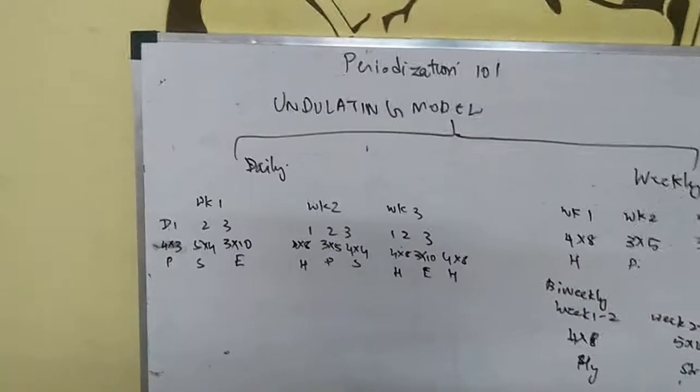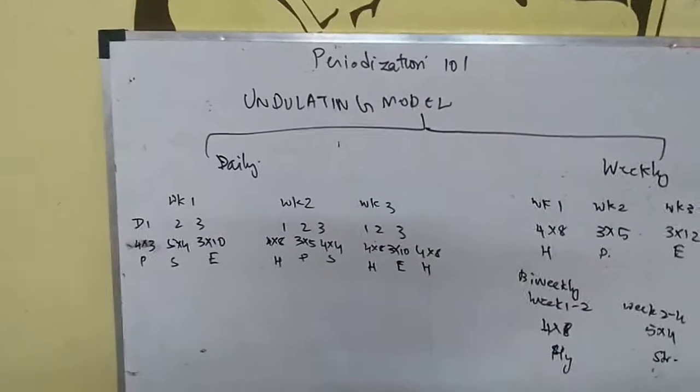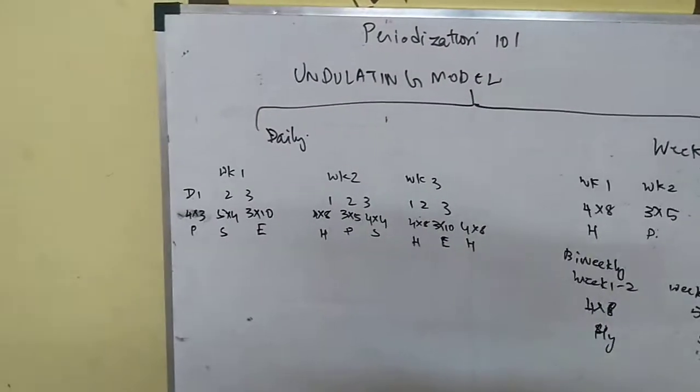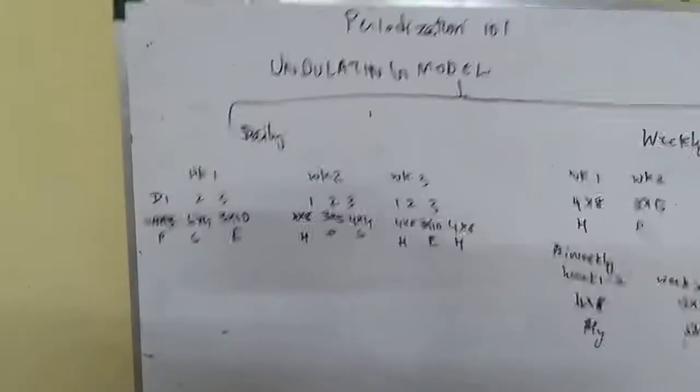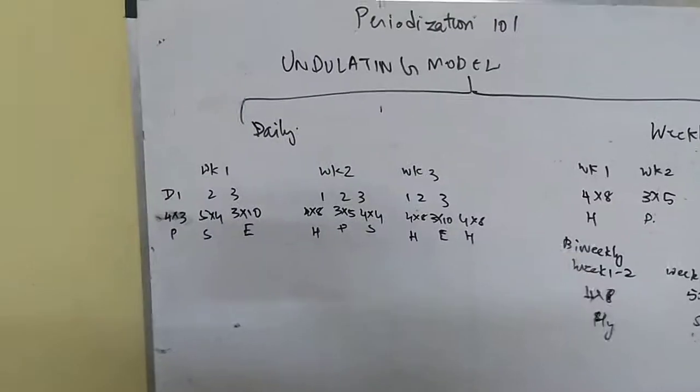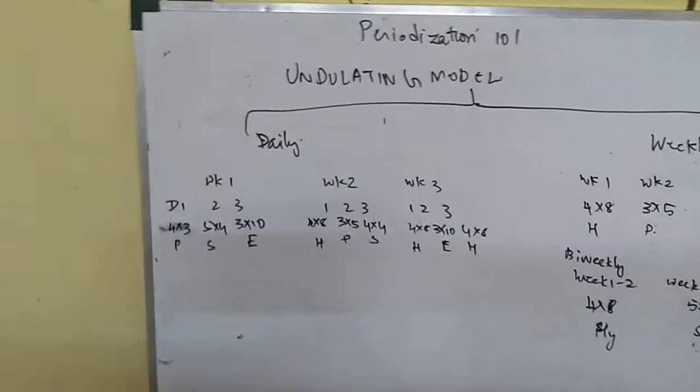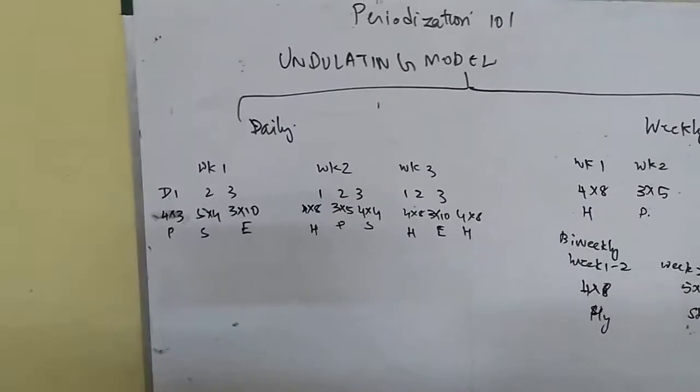Also, you can go for hypertrophy, power and strength, or hypertrophy endurance. The choice of loading and volume is dependent upon the ability needing to be trained. In this case, if they don't need any endurance period or hypertrophy, you can just switch the rep ranges.